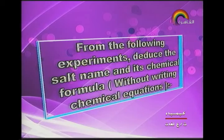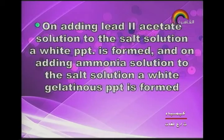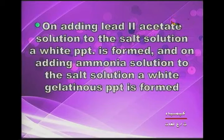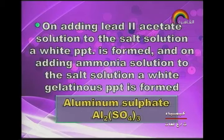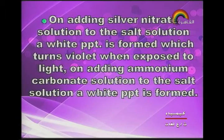Next type of question: from the following experiments, deduce the salt name and its chemical formula without writing the chemical equation. When adding lead acetate solution to the salt solution, a white precipitate is formed, and on adding ammonia solution to the salt solution, a white gelatinous precipitate is formed. The answer is aluminum sulfate, chemical formula Al₂(SO₄)₃.